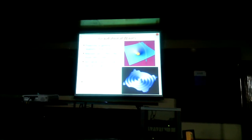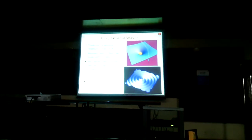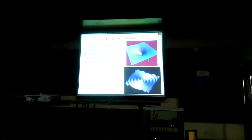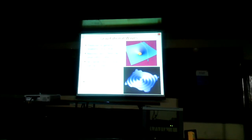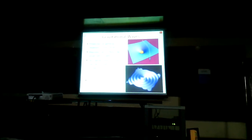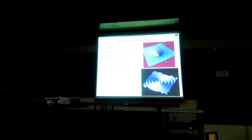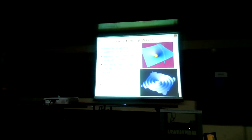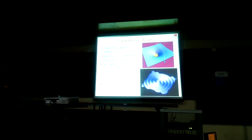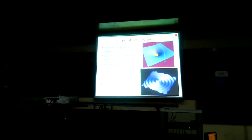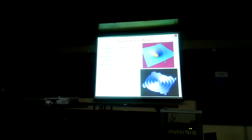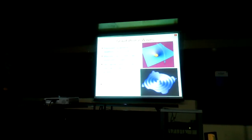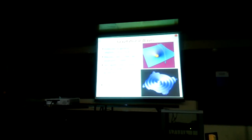Gravitational waves carry energy, but they're very weak. The formula for the luminosity of gravitational waves has a very tiny factor: it's the square of the third time derivative of the quadrupole moment, multiplied by Newton's gravitational constant divided by the fifth power of the speed of light. That number is so tiny that Einstein himself thought these waves couldn't be detected.